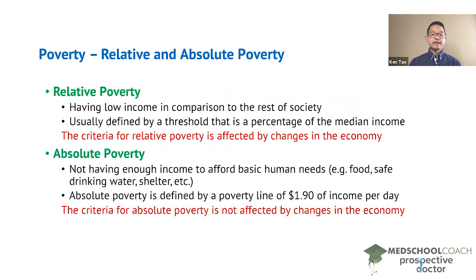Absolute poverty is not having enough income to afford basic human needs. Basic human needs include food, safe drinking water, shelter, and more.